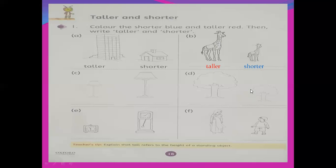I think all of you like colors, so this video is very interesting for you. Part C — which one is shorter? This is shorter and this is taller. I will write 'shorter' with blue — it means you color blue. And I will write 'taller' — it means you color that picture red. Part D — of course this is taller. You will write 'shorter' for the small one and color it blue, and write 'taller' for the big one and color it red.